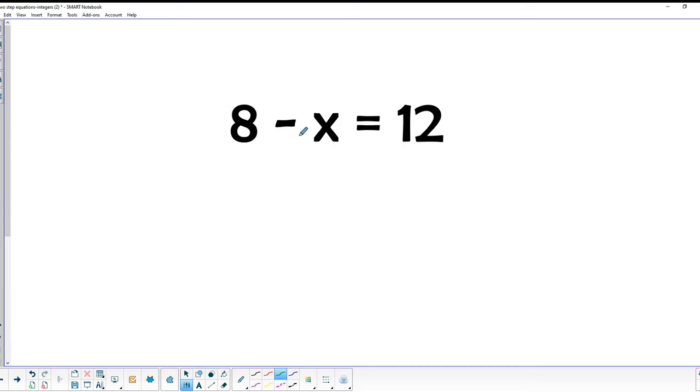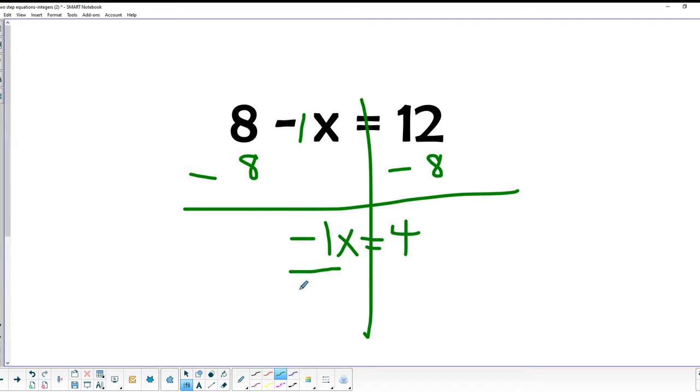Oh, here's one of those examples where we've got kind of an interesting setup in front of the variable where there's nothing there. Well, when there's nothing there except a minus sign, we always know that there's just an imaginary 1 that's going to be there so that we don't lose place of what's going on. So on this one, we're going to start out by subtracting 8 from both sides. So we end up with negative 1x equals 12 minus 8, which is 4. And when we divide both sides by that negative 1, that gives us x equals negative 4. So there's our answer on that one.